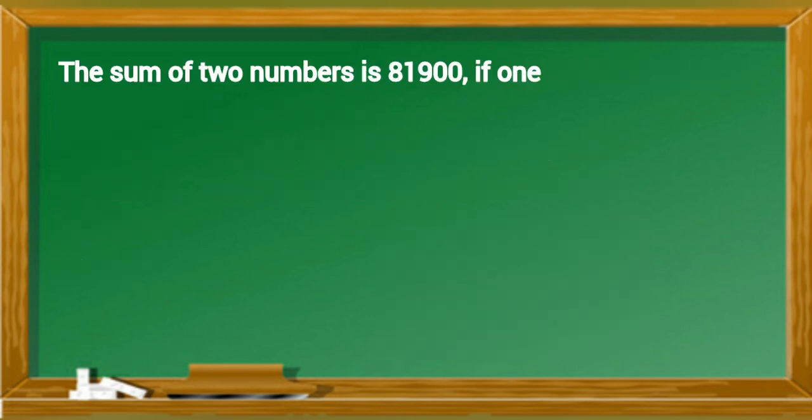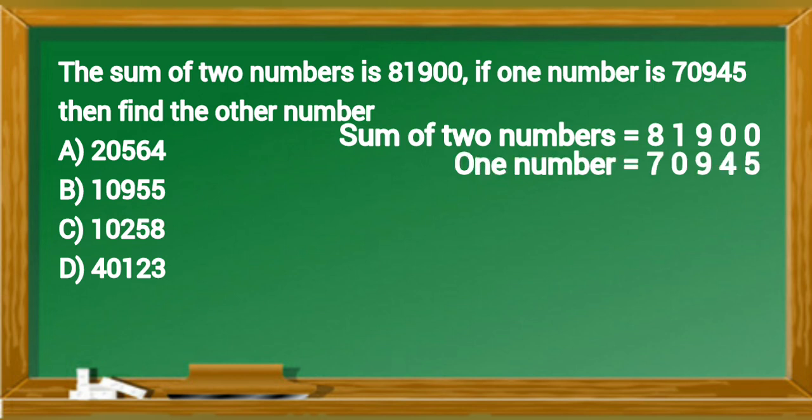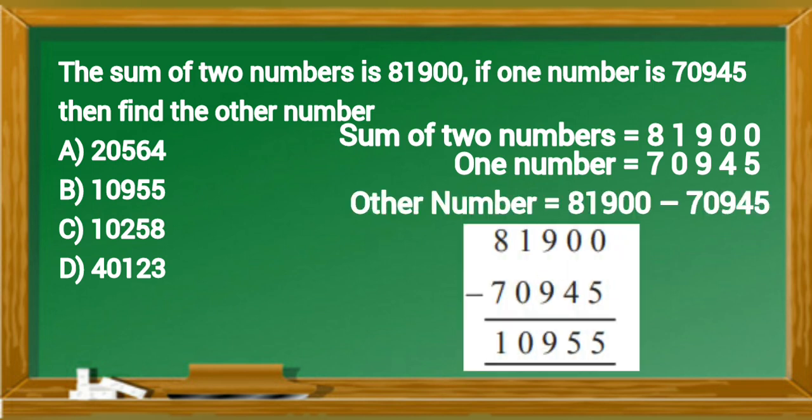The sum of two numbers is 81,900. If one number is 70,945, then find the other number. Sum of two numbers equals 81,900. One number equals 70,945. Other number is 10,955. So option B is correct answer.